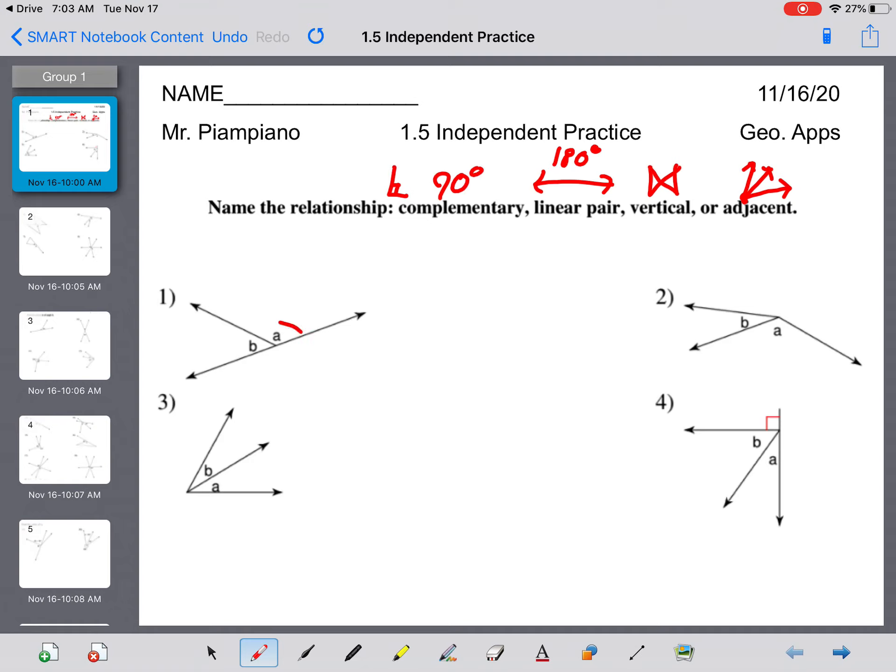If you notice here, A and B, they create a straight line. So they're a linear pair. These are also adjacent. If you look at number three, it's just adjacent. They share a vertex and a ray. Two, same deal. Adjacent.